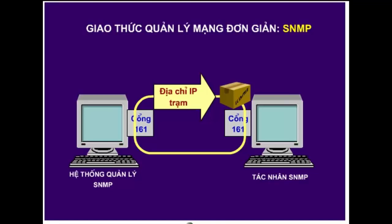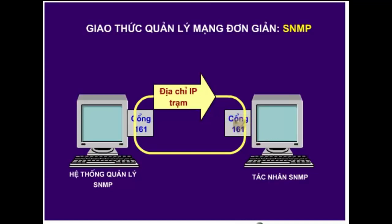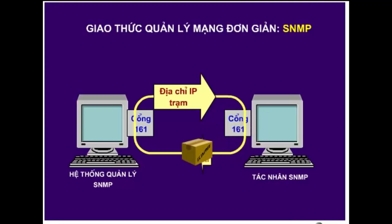Sau đó, gói dữ liệu được định tuyến đến cổng UDP-161 của máy tác nhân. Tiếp theo, tác nhân sẽ kiểm tra gói tin và gửi lại gói tin chứa thông tin trả lời do phần quản lý SNMP yêu cầu.